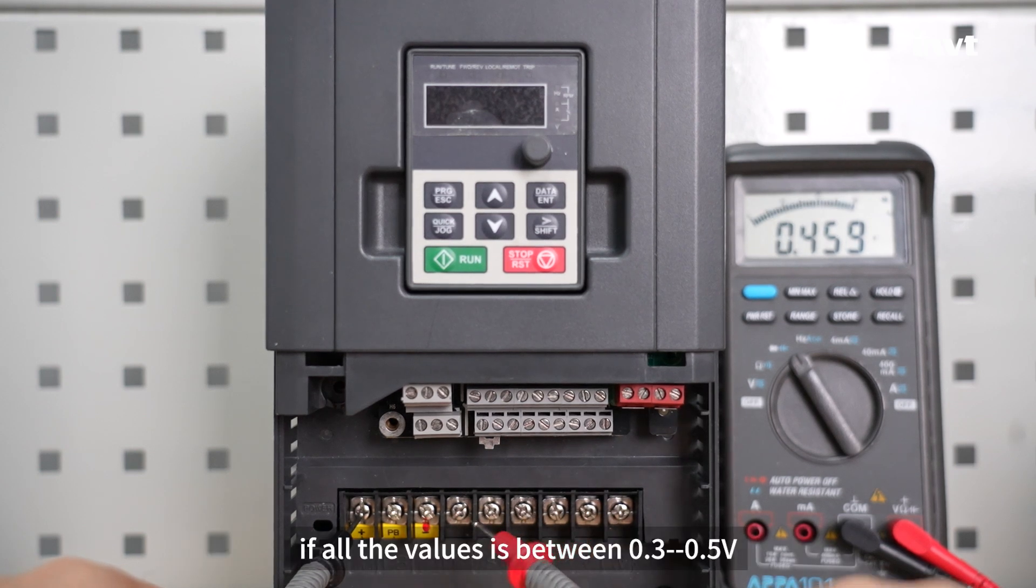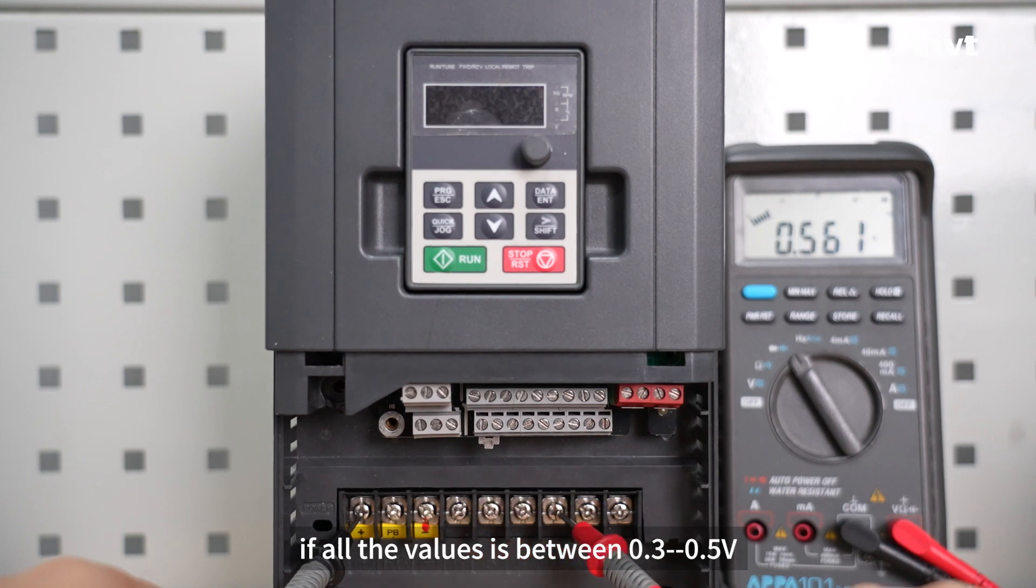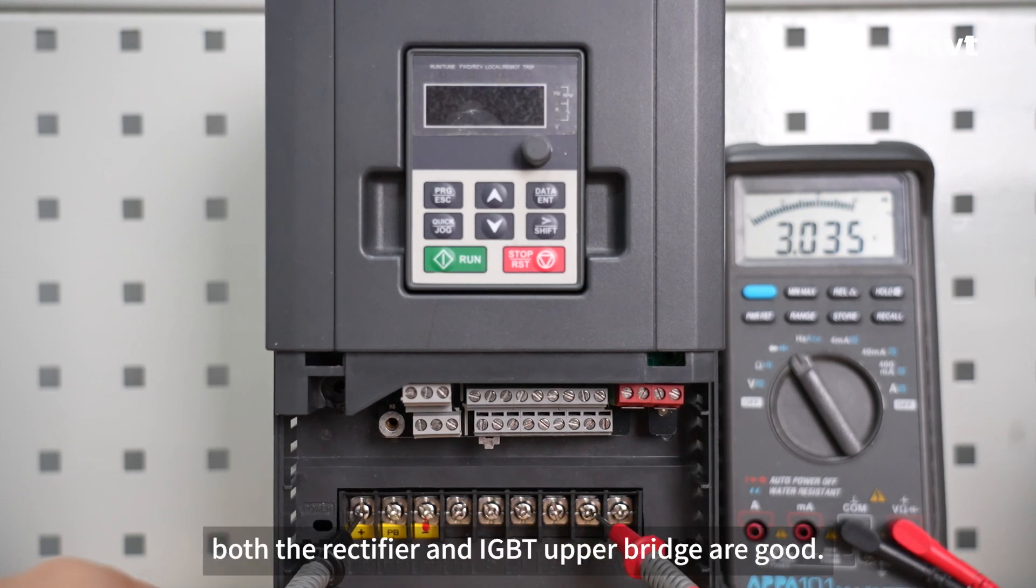If all the values are between 0.3 to 0.5 volts, both the rectifier and IGBT upper bridge are good.